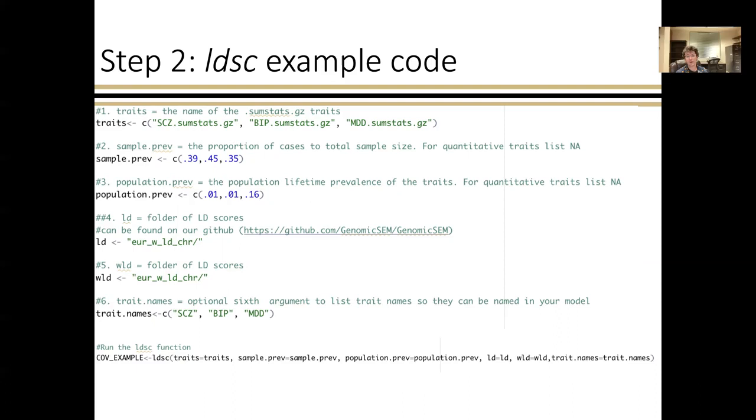The fourth and fifth argument are the folder of LD scores and the LD score weights. In almost all cases, this is going to be the same folder, and here we're using the European LD scores because we're using European-only summary stats. And then finally, we specify the names of the traits, and this is how the traits are going to be named in your actual model. And on this last line of code, we run LD score regression.